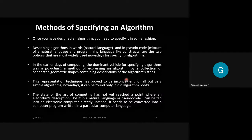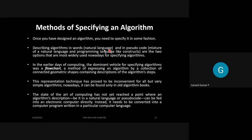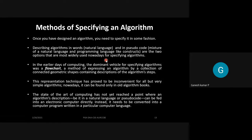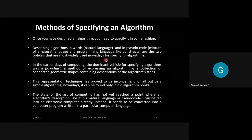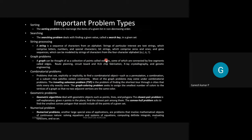Methods of specifying an algorithm include natural language statements, flowcharts — a symbolic representation of an algorithm — and pseudocode, which is also an important and effective method of specification.